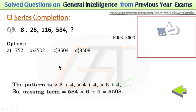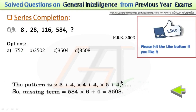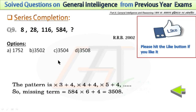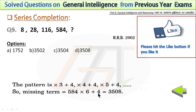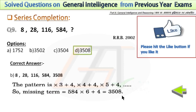In the next problem, this series is also a combination of addition and multiplication. For multiplication, we are using consecutive numbers like 3, 4, 5, and for addition, each time we are using 4. So if we multiply 8 by 3, we get 24, and if we add 4 to 24, we get 28. Following this pattern, if we multiply 584 by 6 and then add 4, we get the missing term, which is 3508.